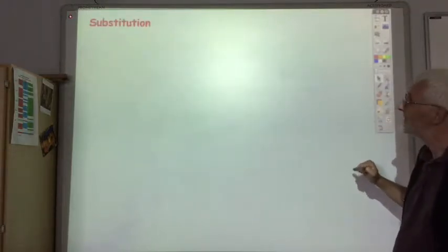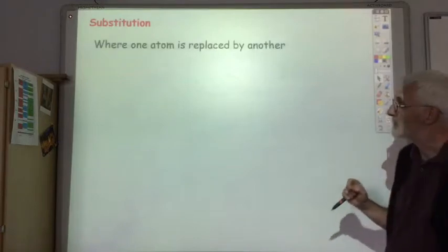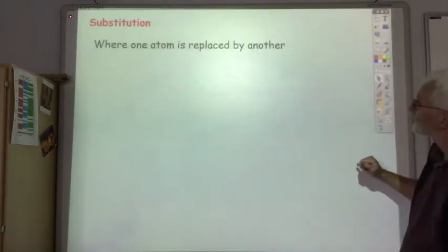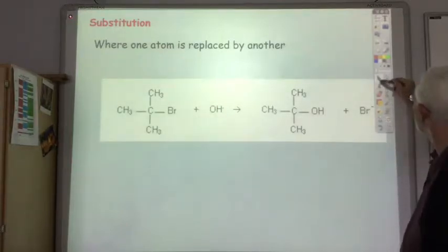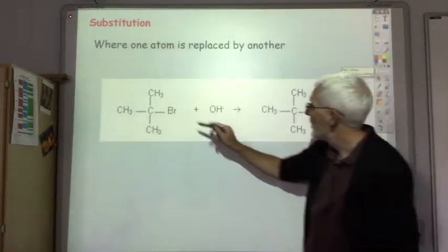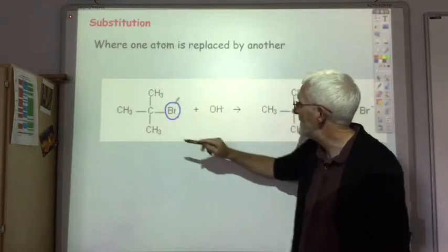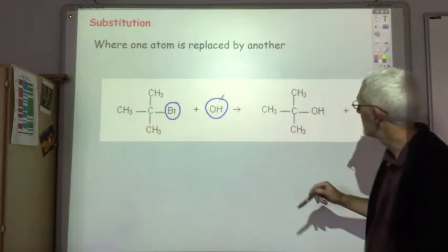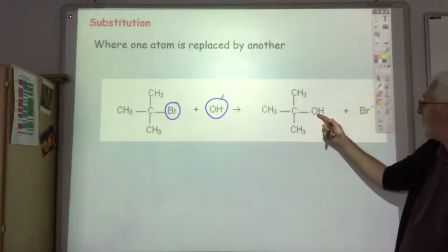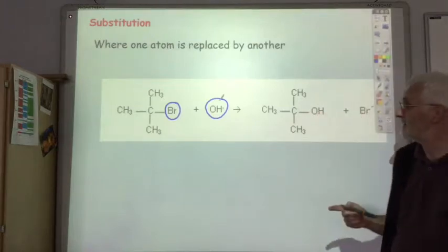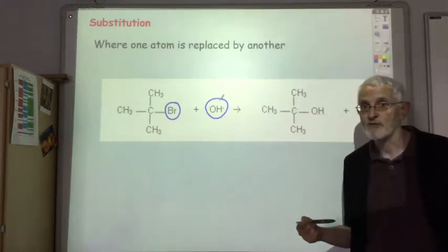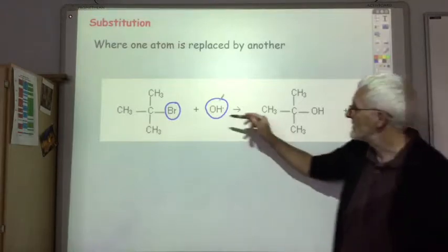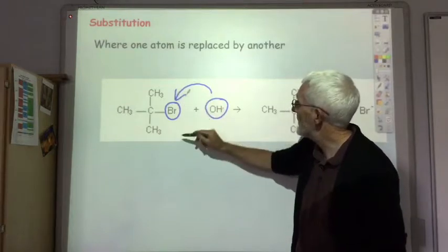Substitution reaction, that's new. It's where one atom or molecule is replaced by another. So for example in this case we replace the bromine with a hydroxide ion so you end up with this alcohol and a bromide ion.